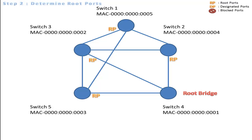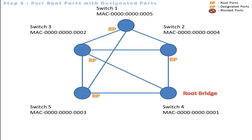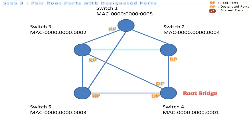The third step is to pair all the root ports with designated ports. This applies to the network between switch 5 and the root bridge, the network between switch 3 and the root bridge, the network between switch 2 and the root bridge, and the network between switch 1 and switch 3.